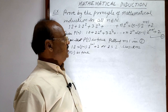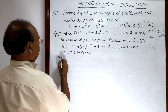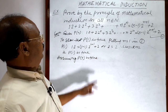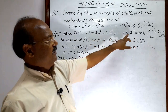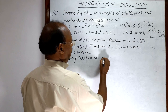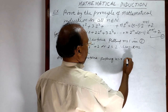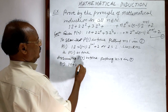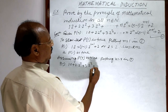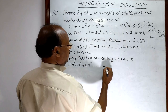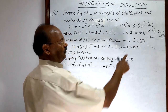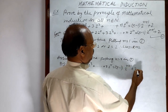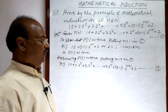Second step: assuming P(r) is true. We get P(r) by putting n = r in relation number 1. The total number of terms on the left hand side will be r. So P(r) is: 1·2 + 2·2² + 3·2³ + ... + r·2ʳ = (r−1)·2ʳ⁺¹ + 2. This is relation number 2, where we assume P(r) is true.